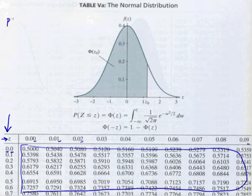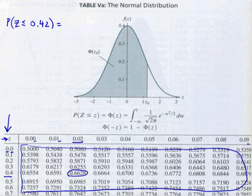For example, if we were interested in finding the probability that Z is less than or equal to 0.42, then all we need to do is find the 0.4 in this first column and the 0.02 in the first row, go down and find the point at which that row and column intersect, and we would read the cumulative probability as being 0.6628.